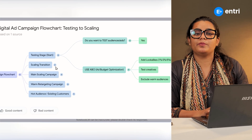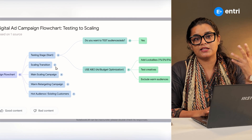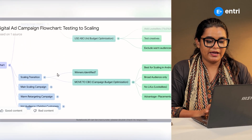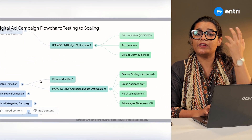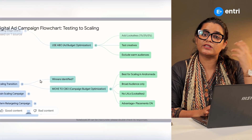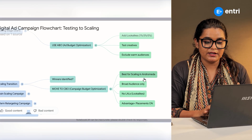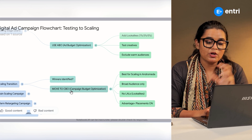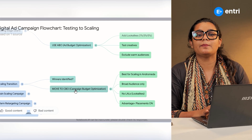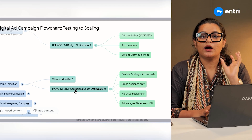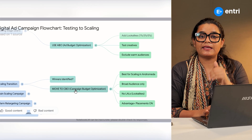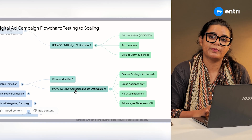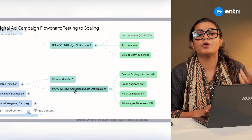We have a scaling process — that's why we do testing first. If you have a winning campaign, you can move to scaling. If you have a broad audience with a CBO, it's a great strategy. With CBO, we have a budget at the campaign level, and you can get the best performance.